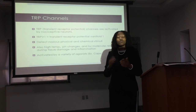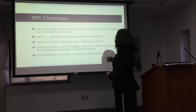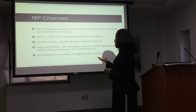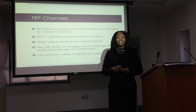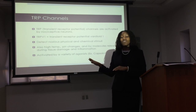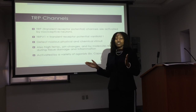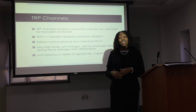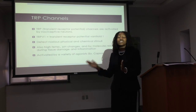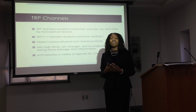So TRP channels — what are they? TRP stands for transient receptor potential, and these channels are activated by nociceptive neurons. The TRP V channel is what I'll talk about today, and the V stands for vanilloid, which is one of the families associated with TRP channels. That family breaks down into subfamilies numbered one through six, and I'm going to talk about TRP V1.